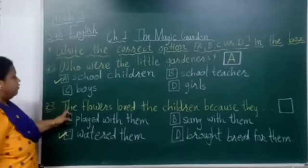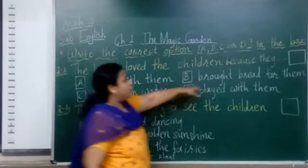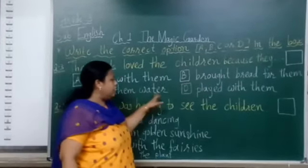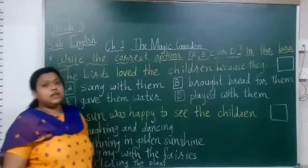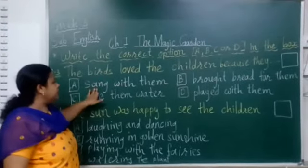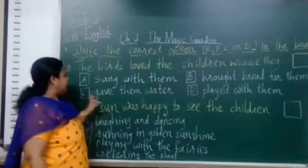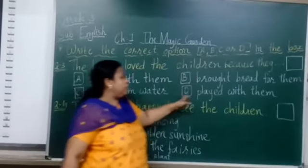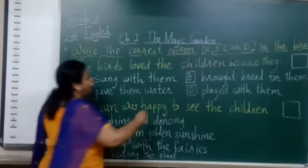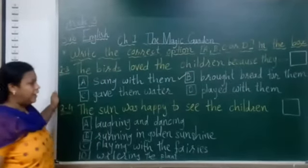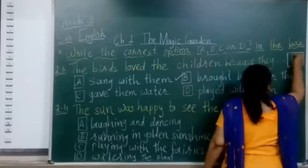Third question: The birds love the children because they — Option A: sang with them. Option B: brought bread for them. Option C: gave them water. Option D: played with them. The answer is Option B — brought bread for them. So write B in the box.